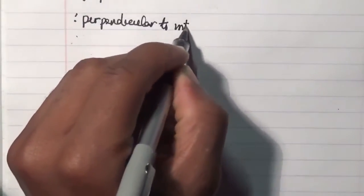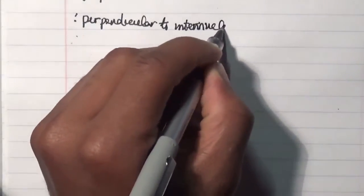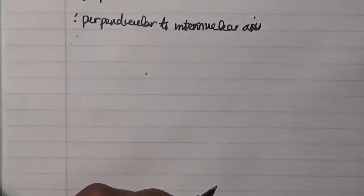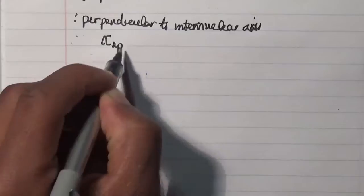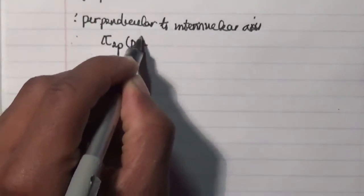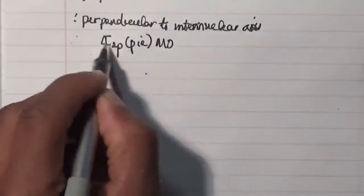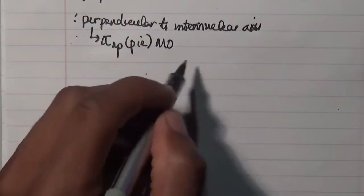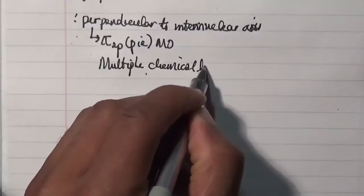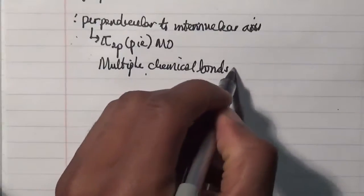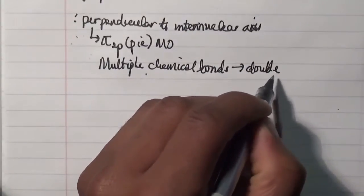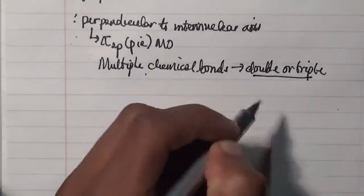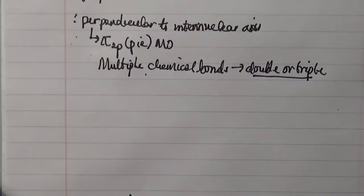Secondly, two 2p orbitals perpendicular to the internuclear axis form the pi 2p molecular orbital. The electron density produced contributes to a multiple chemical bond, which could be either a double or a triple bonding case, as we'll see later.